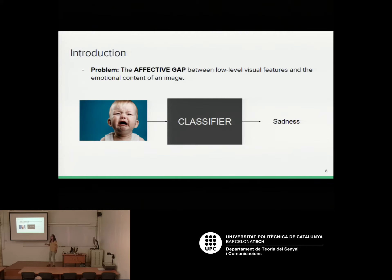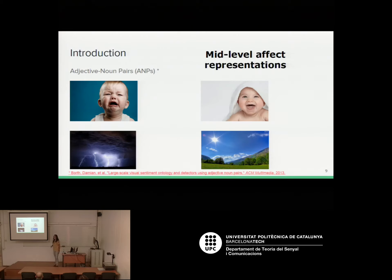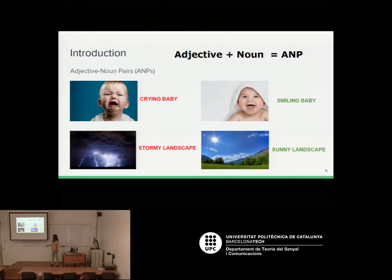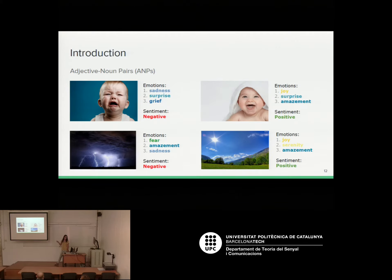We are working on the problem of mapping sentiment to images. When we deal with this problem, we have to deal with the affective gap between the low-level features and the high-level emotional content in the image. We are going to use adjective-noun pairs (ANPs), which are a mid-level affect representation presented by Borth in 2013. They represent emotions using a noun describing an object or scene plus an adjective giving emotional bias — for example, 'crying baby' and 'stormy landscape' are clearly negative, while 'smiling baby' and 'sunny landscape' are positive. We can then map these labels to emotions or sentiments.